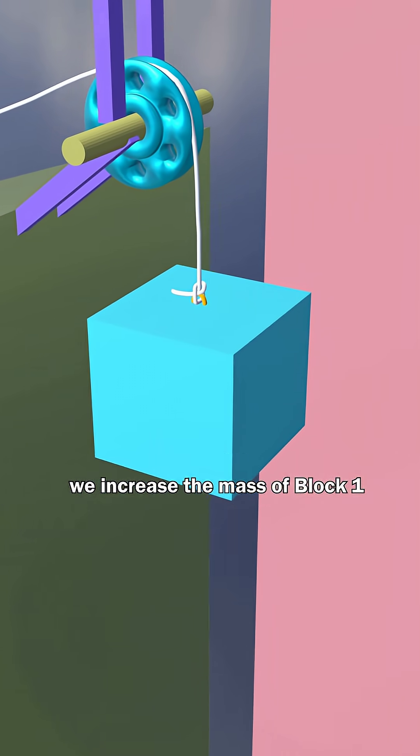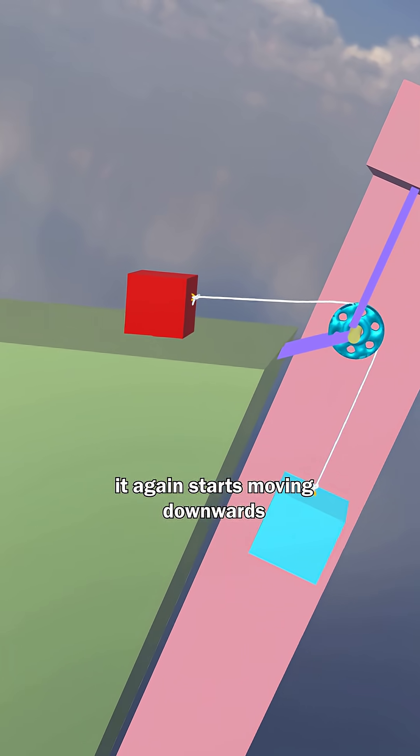To counter this, we increase the mass of block 1. Now as the mass of block 1 increases, it again starts moving downwards.